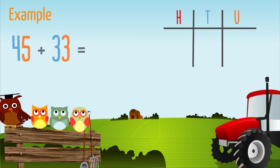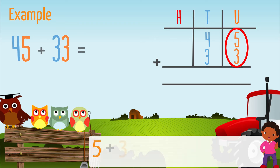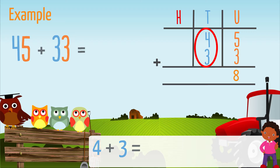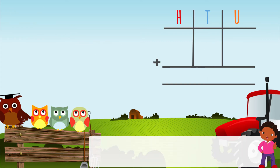Place the digits one below the other and in the correct column. Show the addition and an equal sign. Add the units column first: five plus three equals eight.